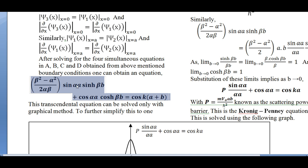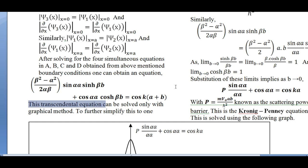After solving the 4×4 determinant, the result is: [(β² − α²)/(2αβ)]·sin(αa)·sinh(βb) + cos(αa)·cosh(βb) = cos(k(a+b)). In the exam, you can memorize this equation without deriving it. This is the transcendental equation obtained after solving the boundary conditions. As it is a transcendental equation, it can be solved with the help of a graph. Now, Kronig and Penney apply the Dirac delta function approximation.